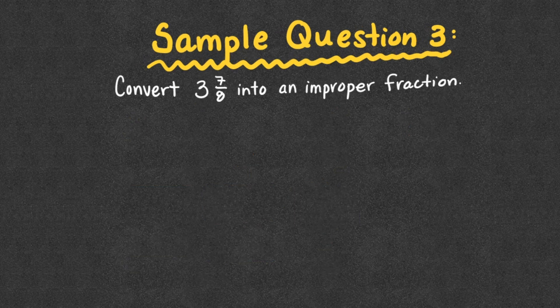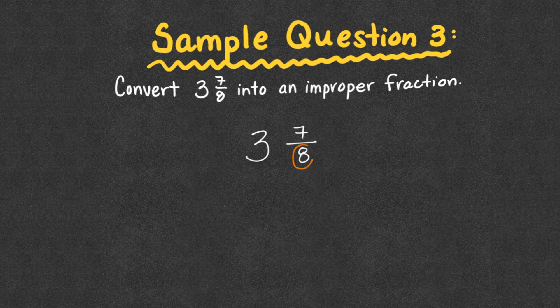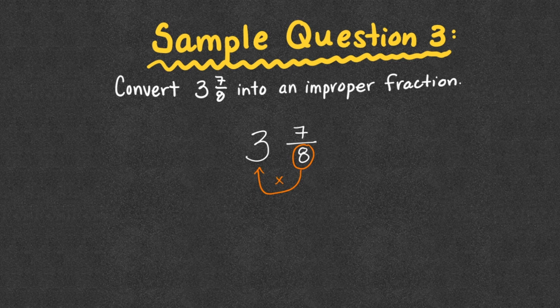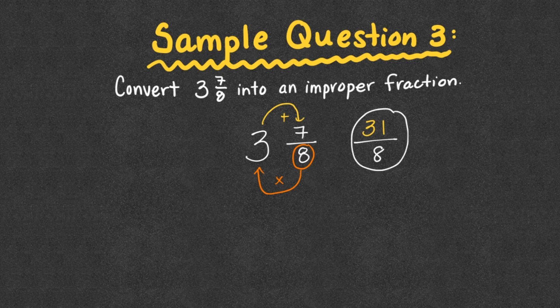Sample question number 3: Turn 3 and 7 eighths into an improper fraction. So we're just going to take 3 and 7 eighths. The eighths tell us there's 8 pieces in each of the 3 wholes. So we're going to multiply those and get 24. We're then going to add on the extra 7 pieces, which gives us 31 over 8. So 31 eighths.